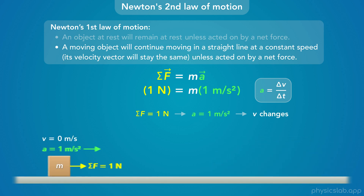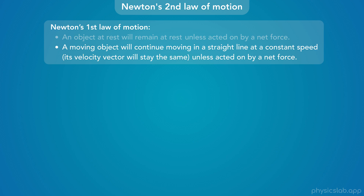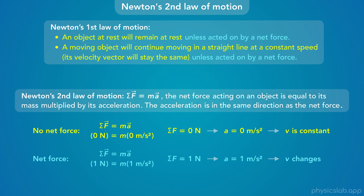If an object is moving and there's zero net force, then acceleration is zero and velocity is constant — the object moves in a straight line at a constant speed. If there is a net force, there's acceleration and the velocity changes. We'll refer to Newton's second law much more than the first, because it lets us calculate things and covers concepts: no net force means zero acceleration and constant velocity; a net force means acceleration and changing velocity.